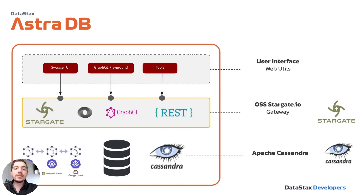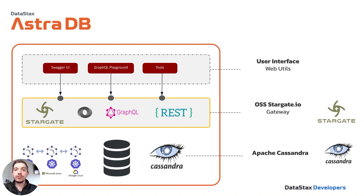Here's our structure: AstroDB is a Cassandra database hosted on AWS, Azure, or Google Cloud. We have the Stargate data layer that exposes these APIs, and in this case we're using GraphQL. We have several tools in Astra to interact with our data through these APIs. We're going to use the GraphQL playground to visualize how we use GraphQL and start inserting some data.